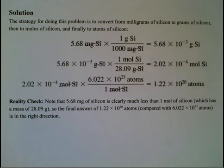So the final answer of 1.22 times 10 to the 20th atoms, when we compare that to Avogadro's number, is in the right direction. It's several exponents smaller than Avogadro's number, which is something that we should expect for this particular calculation.